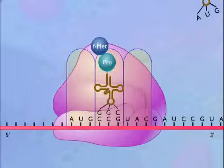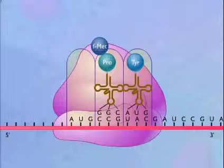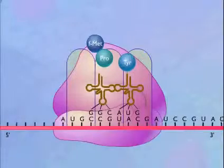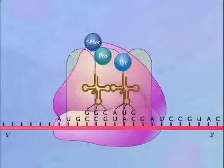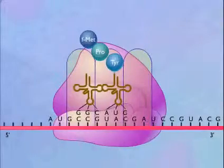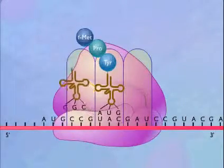A transfer RNA carrying the next amino acid now moves into the A-site where the anticodon on the transfer RNA matches the codon on the messenger RNA. The ribosome shifts down by a distance of one codon. As the shift occurs, the two amino acids on the transfer RNA in the P-site are transferred to the new amino acid, and the second transfer RNA is released from the E-site.